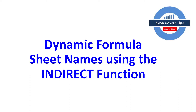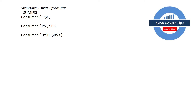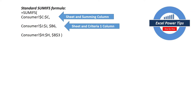What are the steps to create the dynamic formula sheet names using the INDIRECT function? A standard SUMIFS formula is composed of the SUMIFS keyword, open bracket, and the name of the sheet — in this case it's consumer — and next to it you put the sum column, in this case column C. The next argument is the same sheet name, consumer.